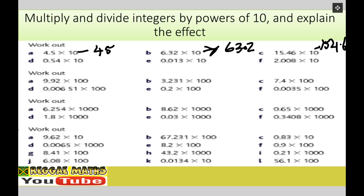Moving on: when we multiply by 10 we move each figure 1 place to the left. Multiplying by 100 means each figure moves 2 places to the left. So 9.92 times 100 — 2 places to the left — this is 992. Again 2 places to the left: 3.231 times 100 is 323.1.